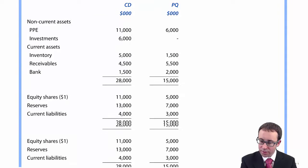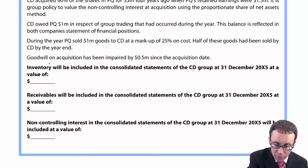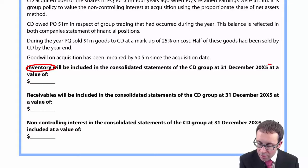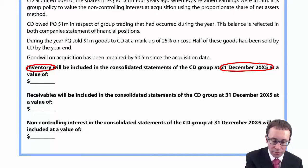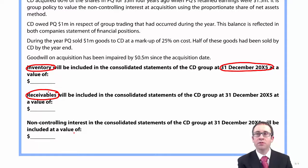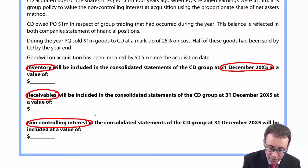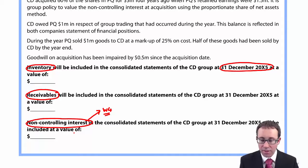Looking at the question requirement, you can see there are three separate parts. First, it wants us to work out the value of inventory within the CD group at the 31st of December 20X5 — that will be 100% of P plus 100% of S, then adjusting for any PUP adjustments. It also wants us to work out the receivables: 100% of P, 100% of S, adjusting for any intercompany balances. And then it wants us to work out the non-controlling interest (NCI). Remember, NCI is usually done with our standard working four, and the post-acquisition profits come from working two, your net assets working.